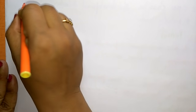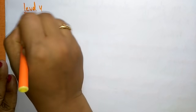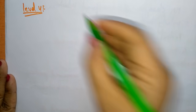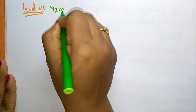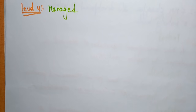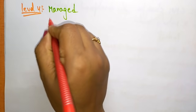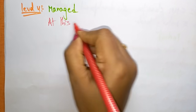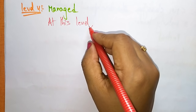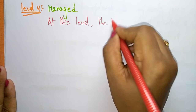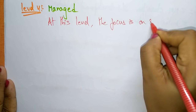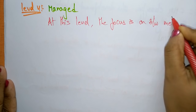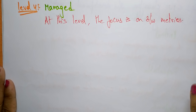Now level four is called Managed. Level four indicates that the focus is on software metrics — the complete focus is on software metrics, tracking the ups and downs of the project and everything related to it.